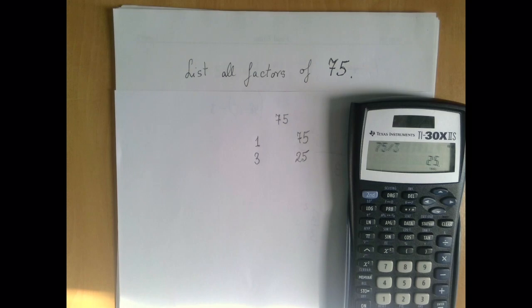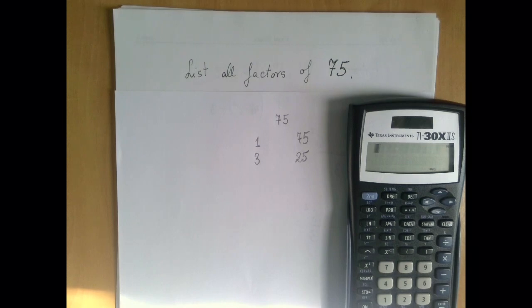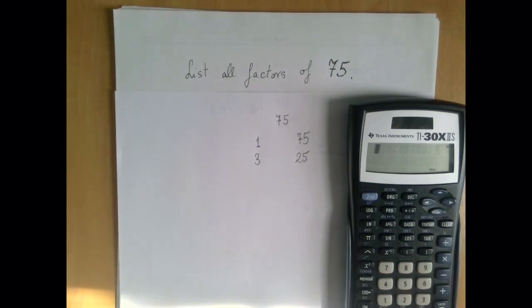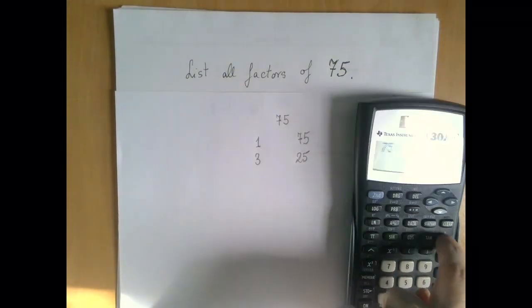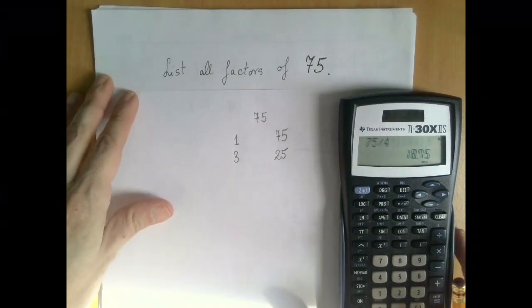After 3 we roll up to 4. 4 cannot be a divisor because if a number is divisible by 4, then it's also divisible by 2. But just to make sure, we can divide: 75 divided by 4 is 18.75, that's not an integer. 4 did not work, we roll up to 5.